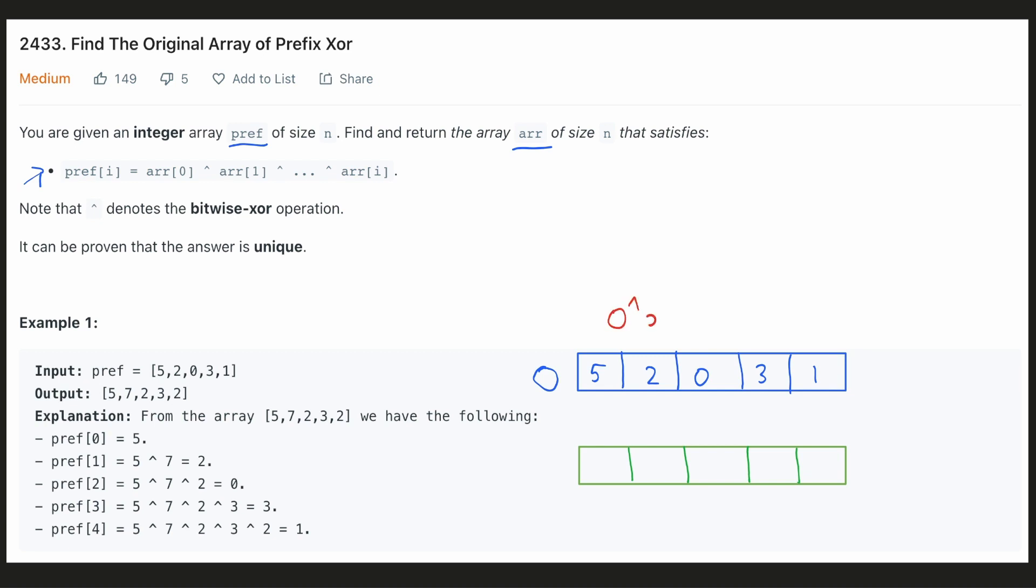Here we have to find a number such that 0 xor that number will result in 5. And we know that 0 xor anything will result in that number itself hence our number is 5. You can also see that from the example itself.